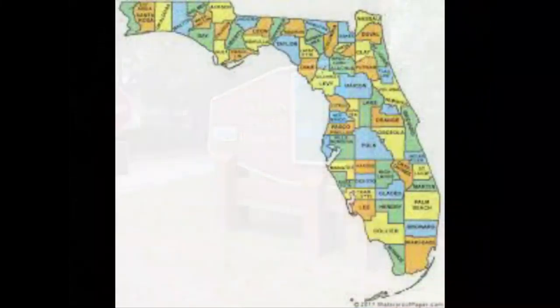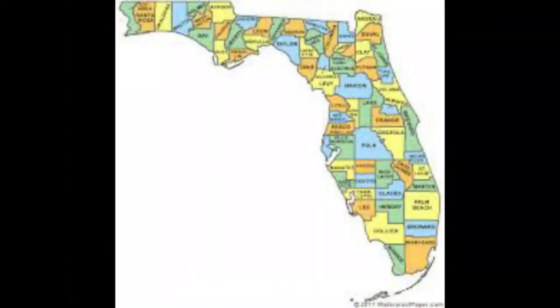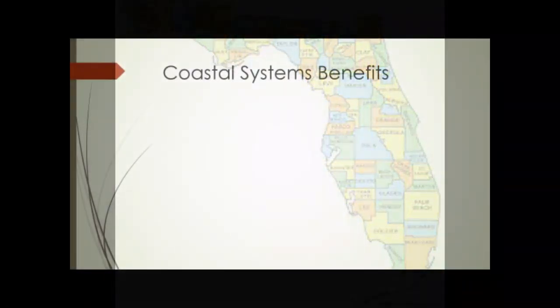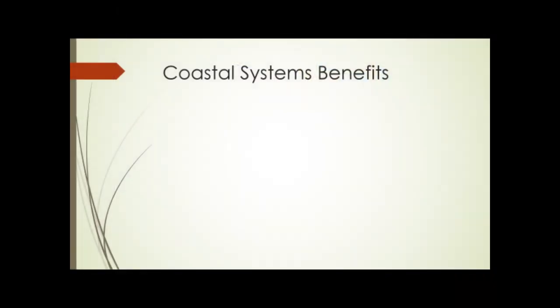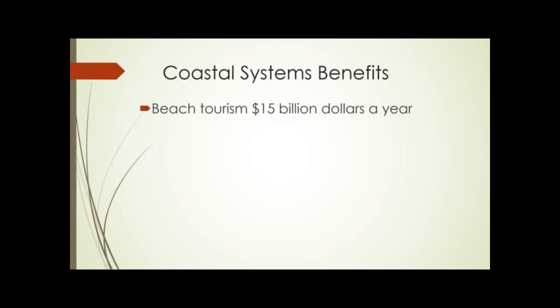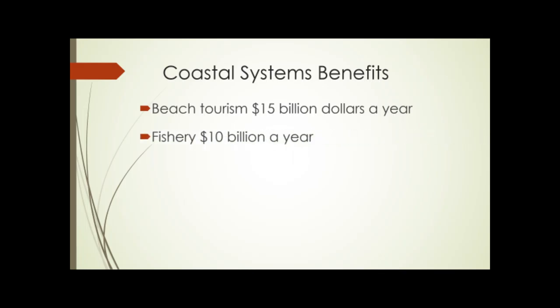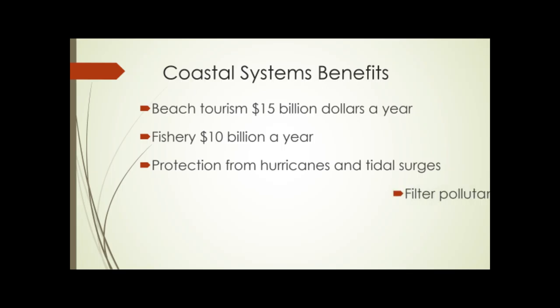Coastal systems are very important to Florida. Of 67 counties, 35 are coastal, and they support 77% of our population. Beach tourism generates $15 billion per year, and our marine fishery is worth $10 billion per year. Barrier islands protect the mainland from direct effects of hurricanes and tidal surges, and estuaries filter pollutants and buffer winds and tides. With rising sea levels, these services become even more important.